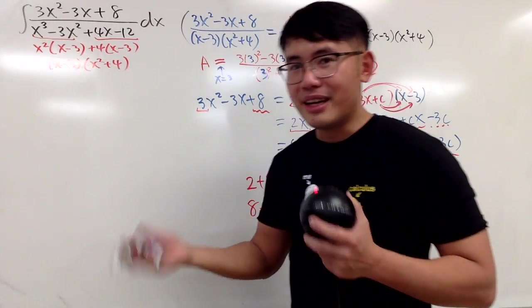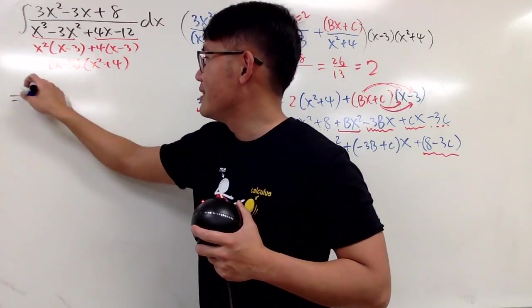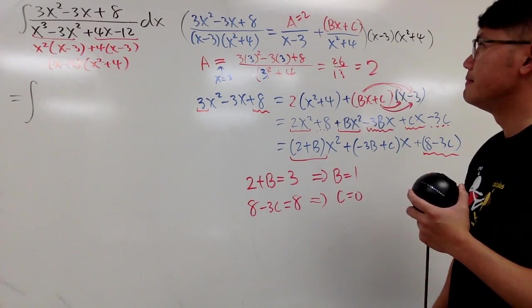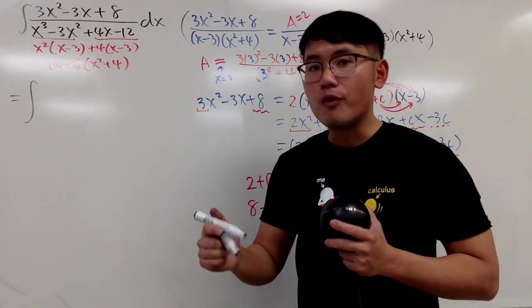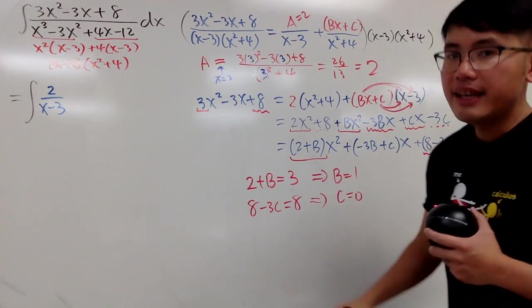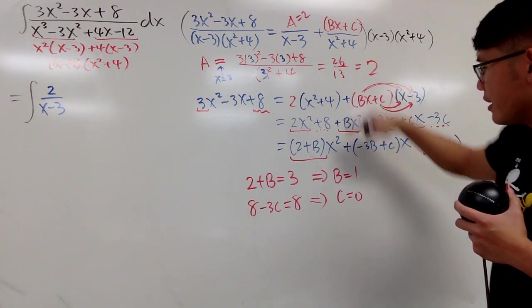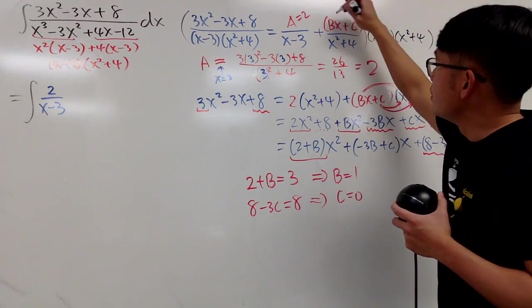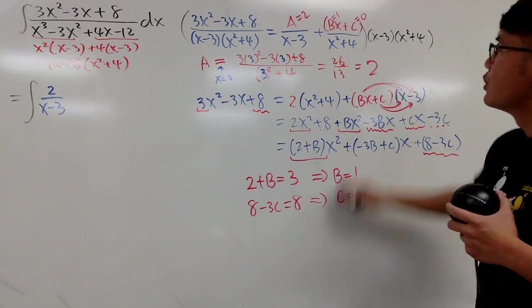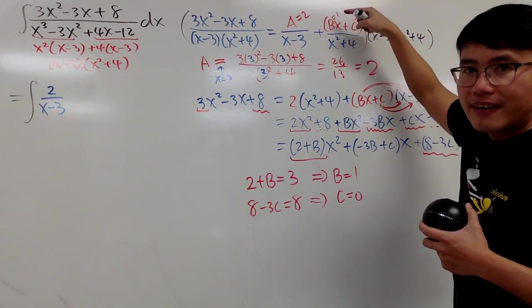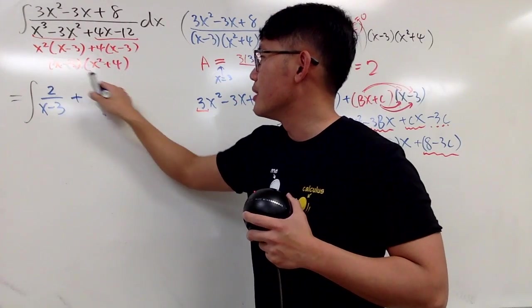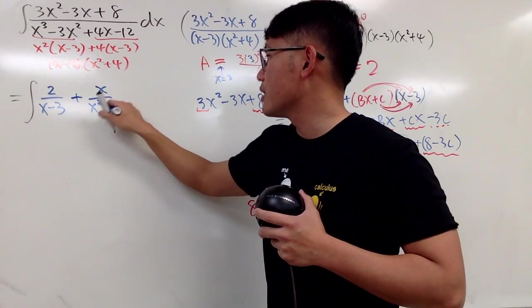Now, we'll come back here and then do the integration. Here's the calculus step, right? Okay. First, we have 2 over x minus 3. Let me just write it down right here for you guys. And then next, b right here is 1, so we know this right here is 1. And c is equal to 0. So, you don't have this anymore. You just have x over x squared plus 4. So, you can just put this down right here. x over x squared plus 4.